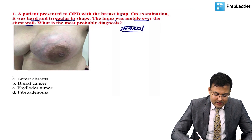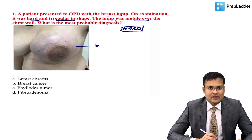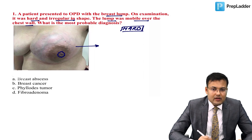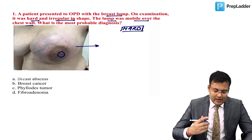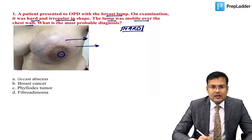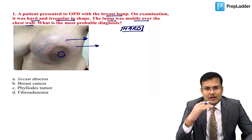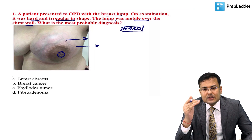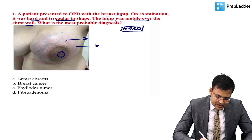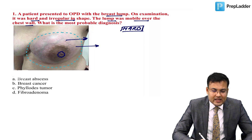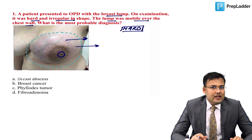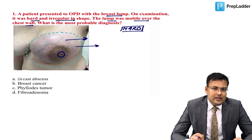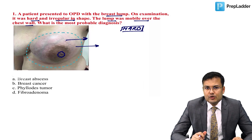If you see the image, the affected breast is massively enlarged. The status of the nipple appears normal, and the tumor is mobile over the chest wall. The surface appears lobulated, and the breast skin color is a bit different from normal. All these findings are seen in which tumor?